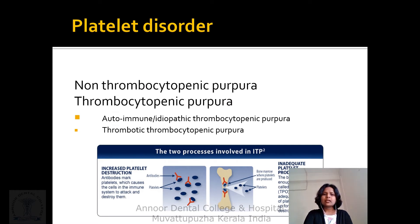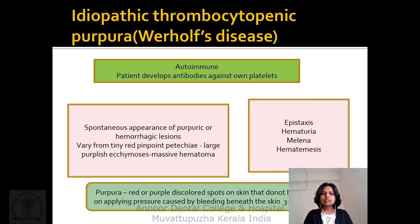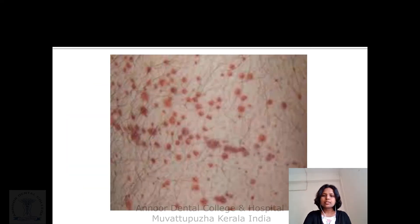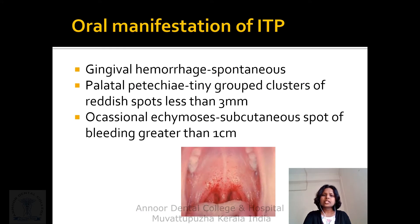Platelet disorders include non-thrombocytopenic purpura and thrombocytopenic purpura. Thrombocytopenic purpura is divided into autoimmune idiopathic thrombocytopenic purpura and thrombotic thrombocytopenic purpura. It varies from tiny red pinpoint petechiae to large purplish ecchymosis and massive hematoma. There can be epistaxis, hematuria, melena, and hematemesis. Oral manifestations include spontaneous gingival hemorrhage, petechiae in tiny clusters of reddish spots less than 3 mm, and occasional ecchymosis.